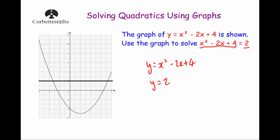You draw the graph for each side, find where they meet each other. Here you can see they cross here and they cross here. You go down and read off the values on the x-axis, and those are your two solutions. So that's what I covered at the end of the last video.